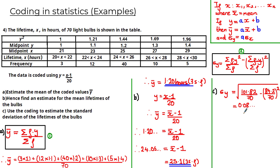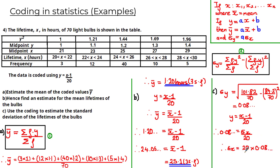Now we've found σy, we use the coding equation y = (x − 1) / 20. The standard deviation of the coded data equals σx / 20, since standard deviation is not affected by the subtraction of 1. Substituting σy gives 0.08... = σx / 20. Multiplying both sides by 20 gives σx = 1.76 hours, rounded to three significant figures.